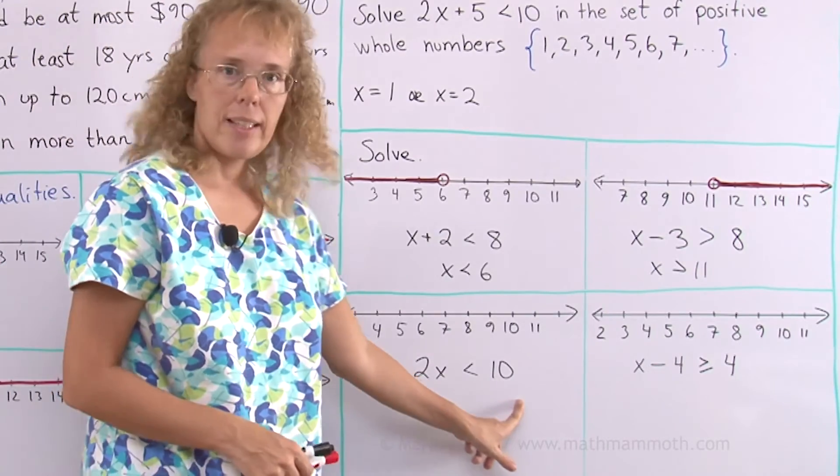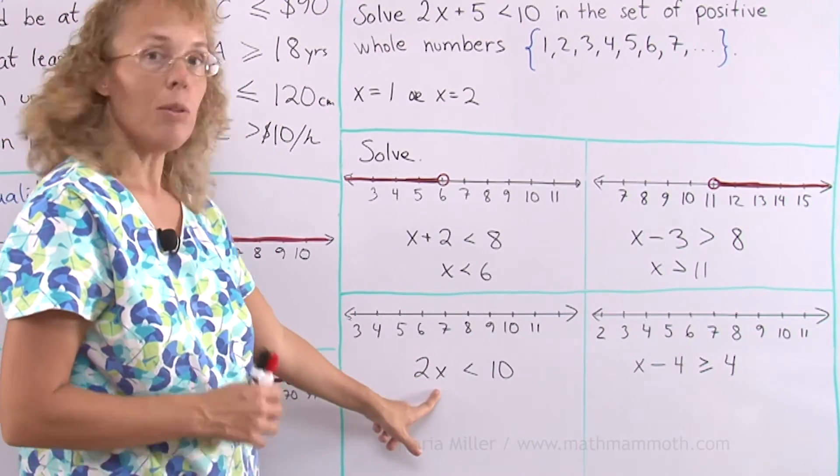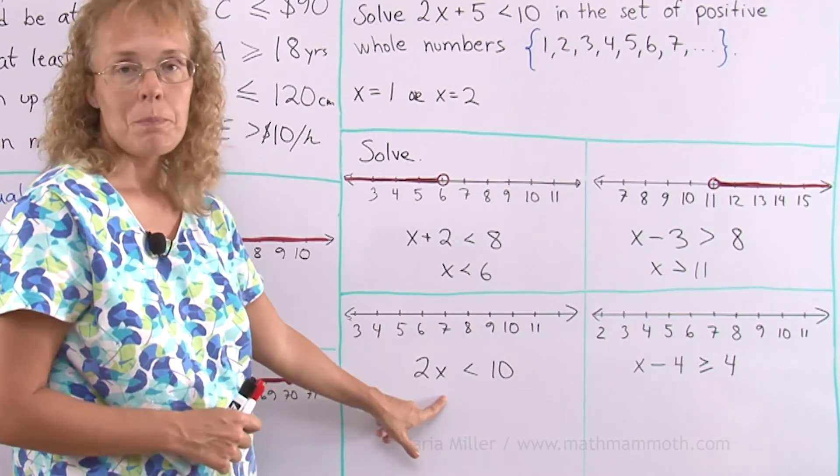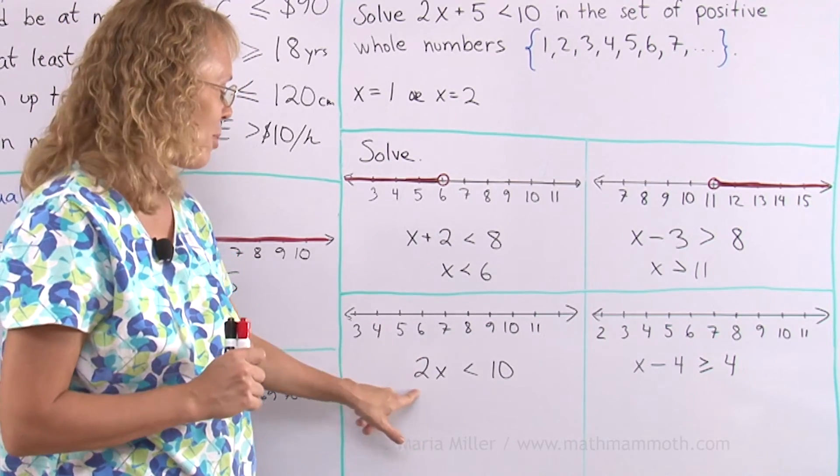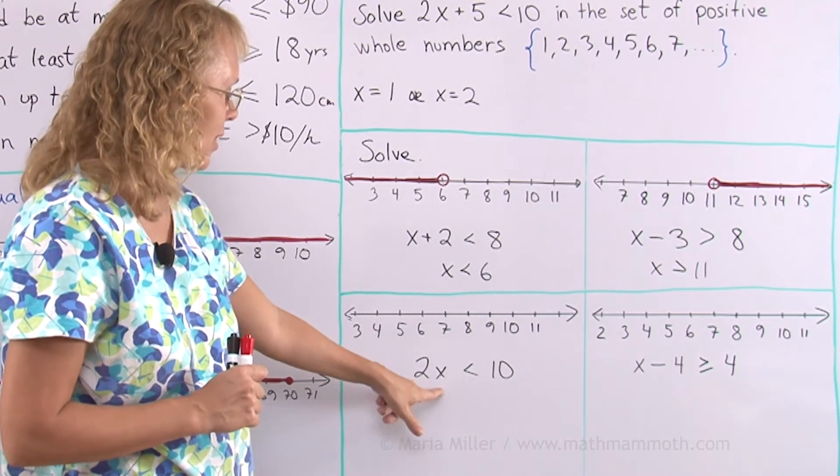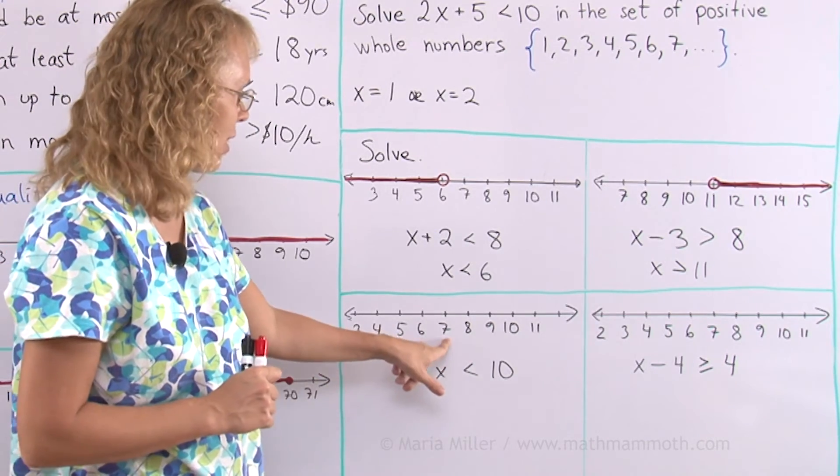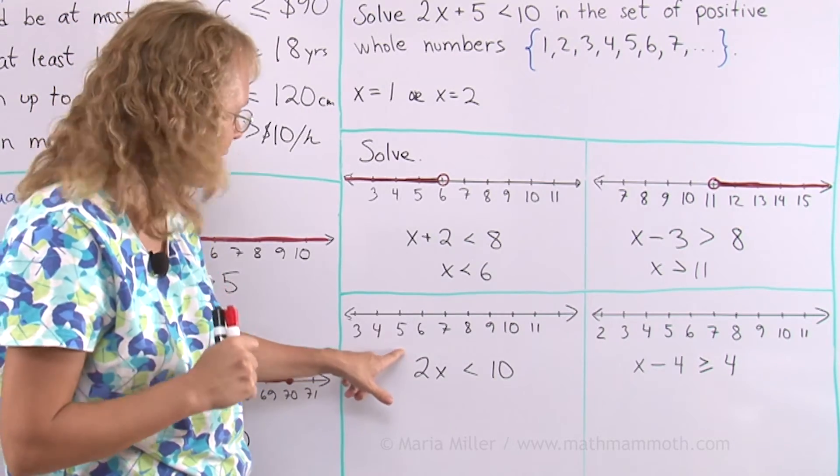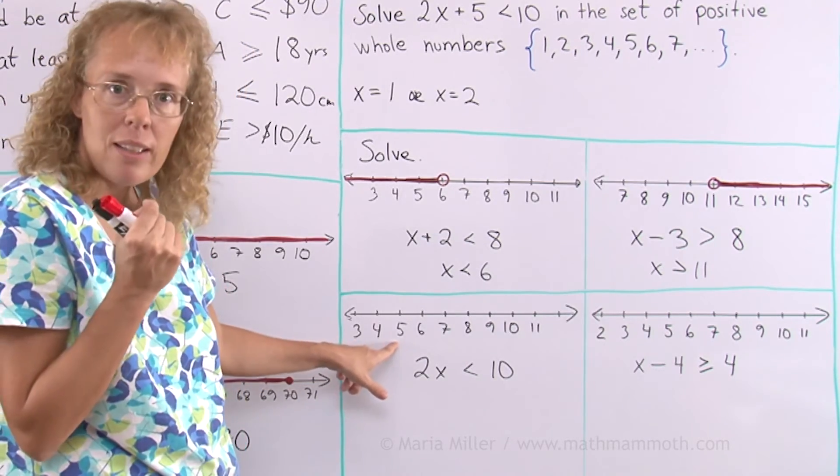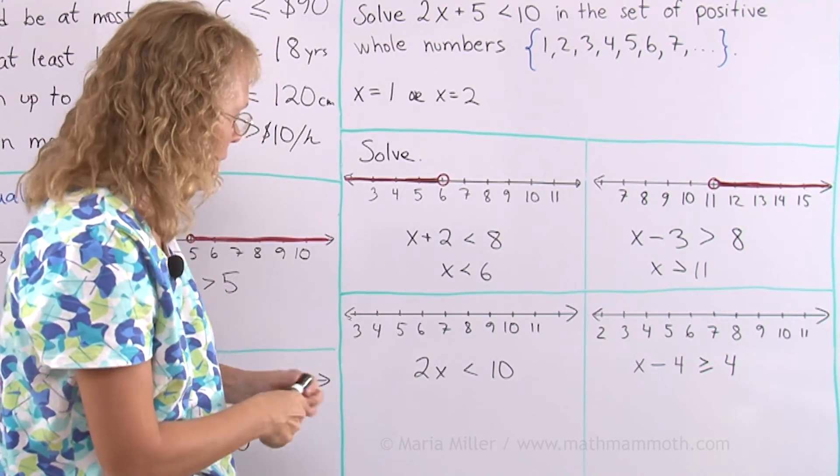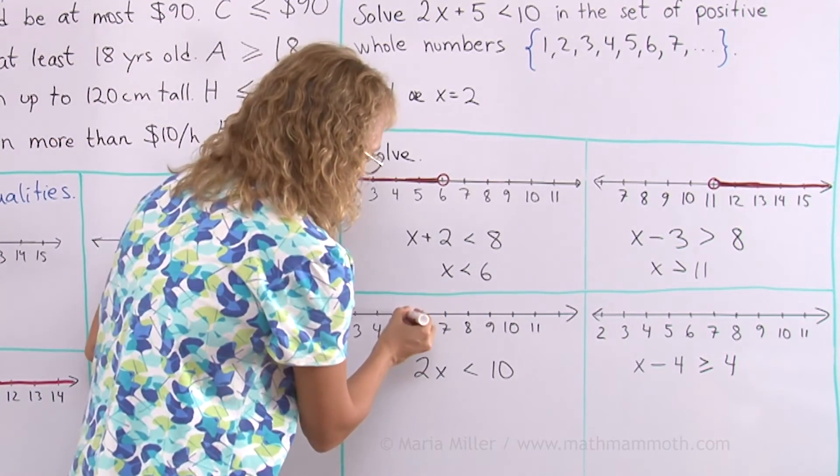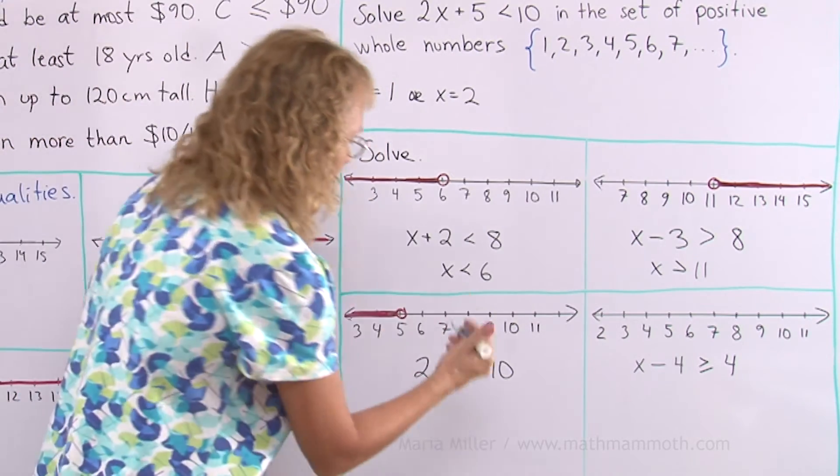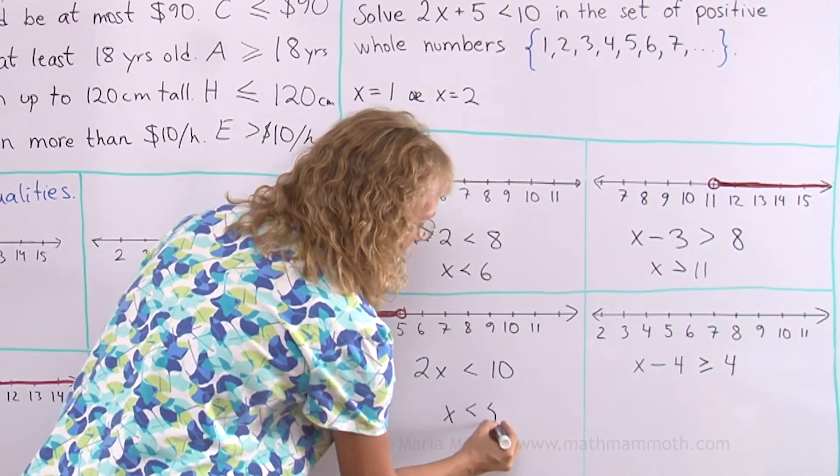2x is less than 10. I'll try my numbers. 3? Works. 4? Works. 5? Doesn't work, because it's exactly 10. 6? Doesn't work. It's 12. And the bigger numbers surely won't work. 5 is the one that almost worked. If I had a number like 4.9 then it would work. So the cutoff point here is 5 and anything less than that should be just fine. And I can also write it here. x has to be less than 5.